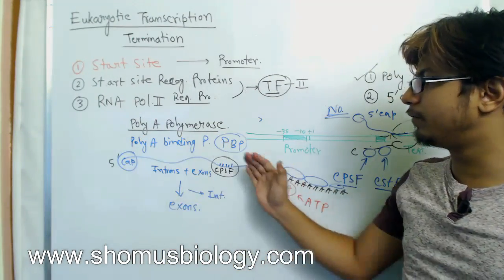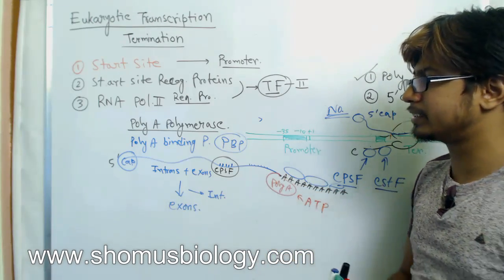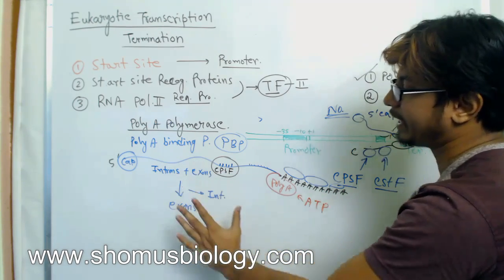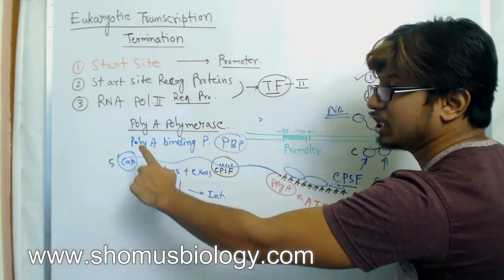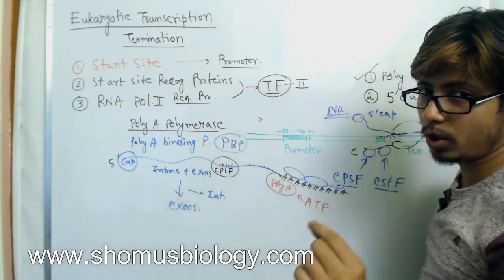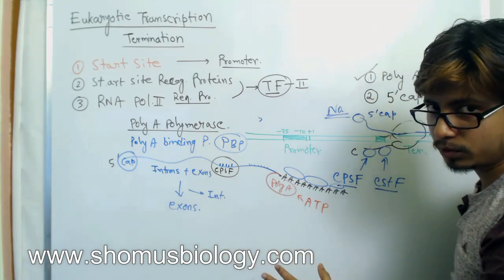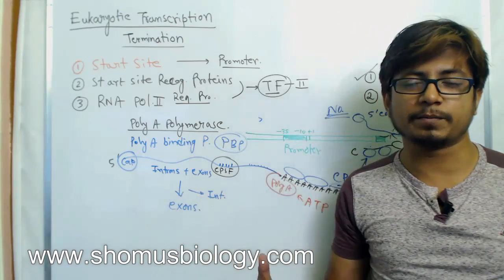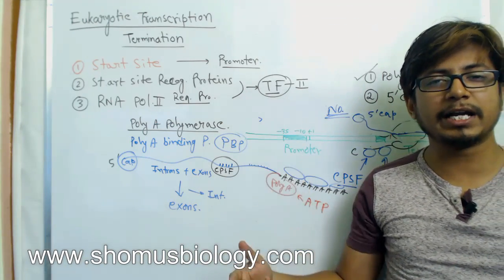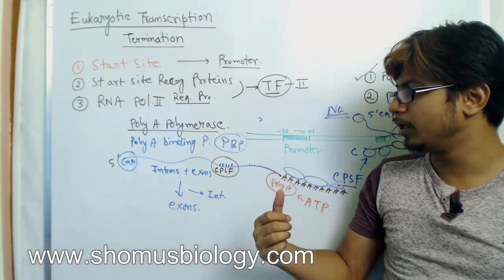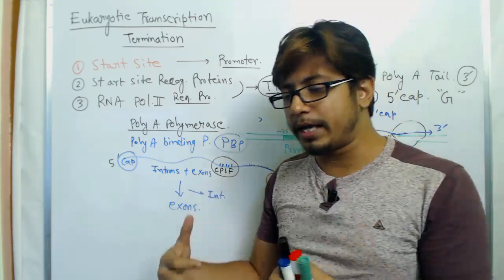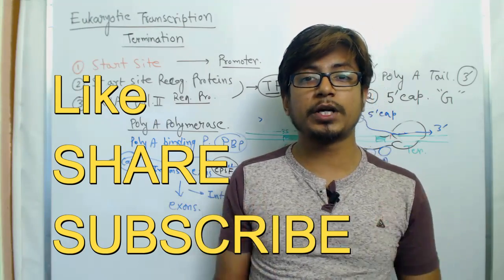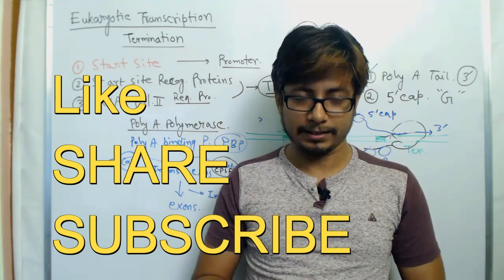So this is the process of eukaryotic transcription termination. At the end of termination you will find a pre-mRNA carrying a five prime cap and three prime polyadenylation, and maturation will take place after the event of splicing, which joins the exons and cleaves out the introns. If you want to know about splicing in detail, I recommend you watch my video on splicing. If you like this video, please hit the like button, share it with your friends, and subscribe to my channel.